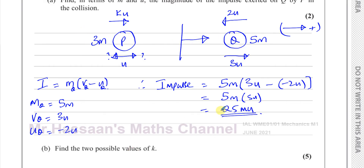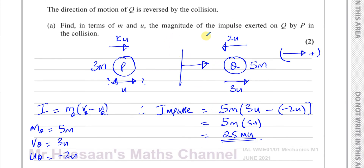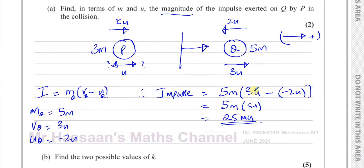That's the impulse exerted on Q by P: 25mu. Since they only want the magnitude, the magnitude of the impulse exerted by P on Q is 25mu. Its direction is in the initial direction of P, or in the opposite direction to the initial direction of Q. But since they only ask for the magnitude, we don't need to state the direction.